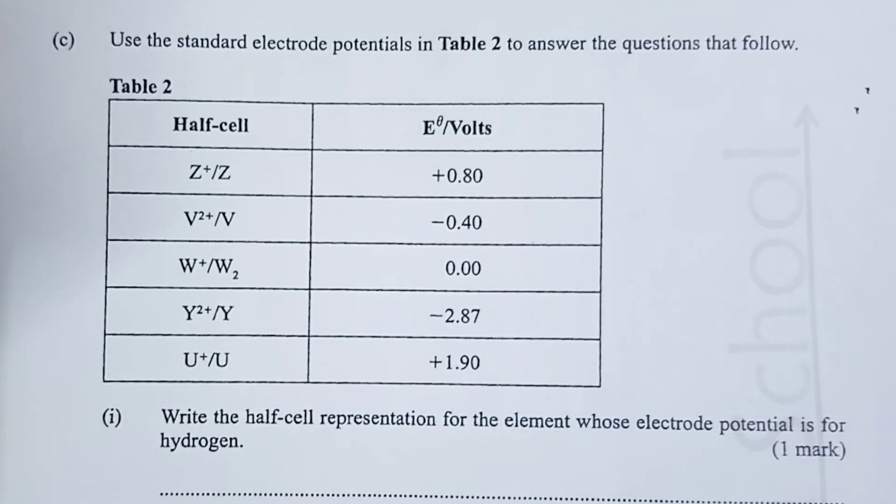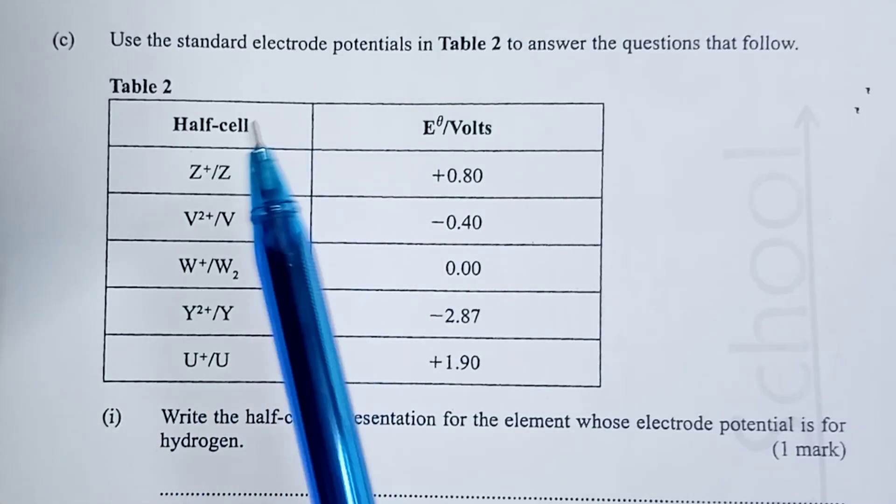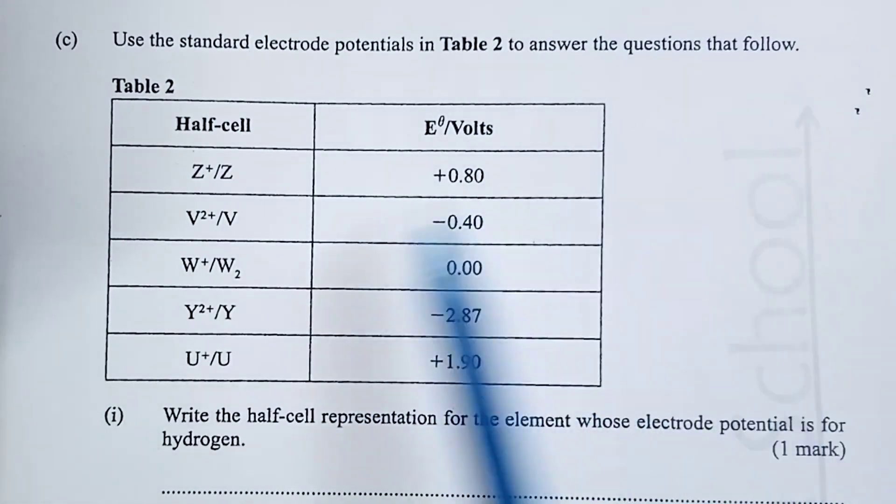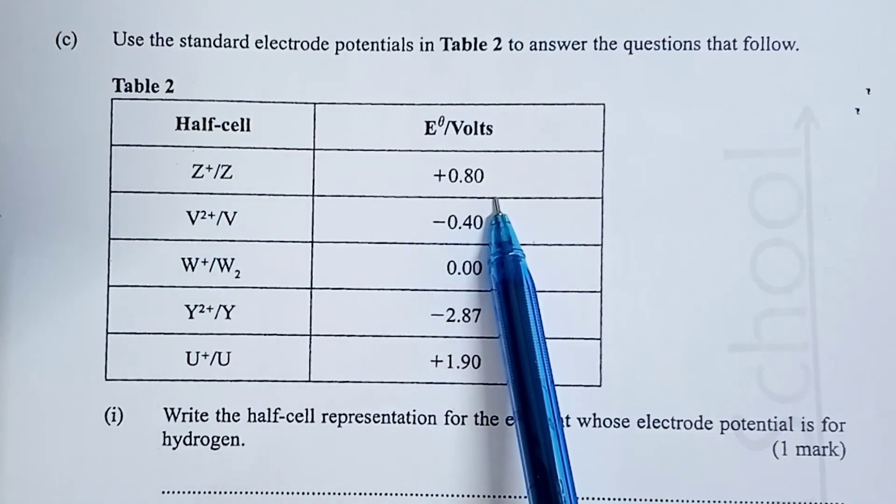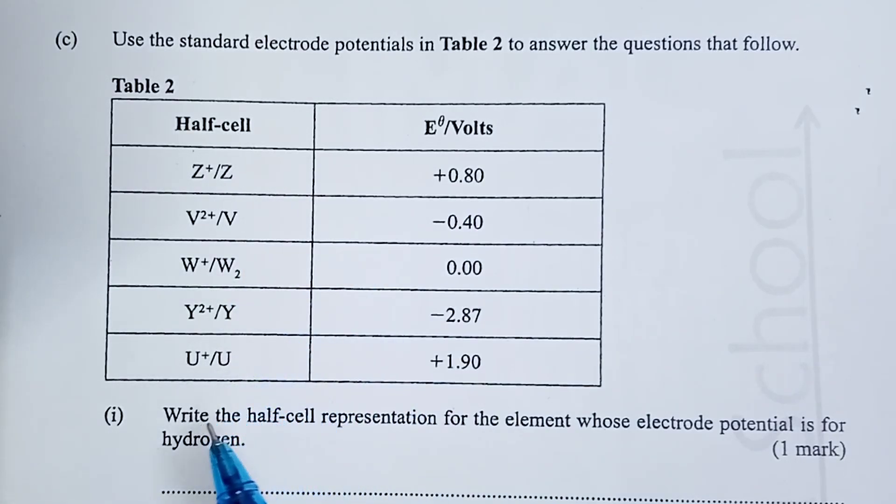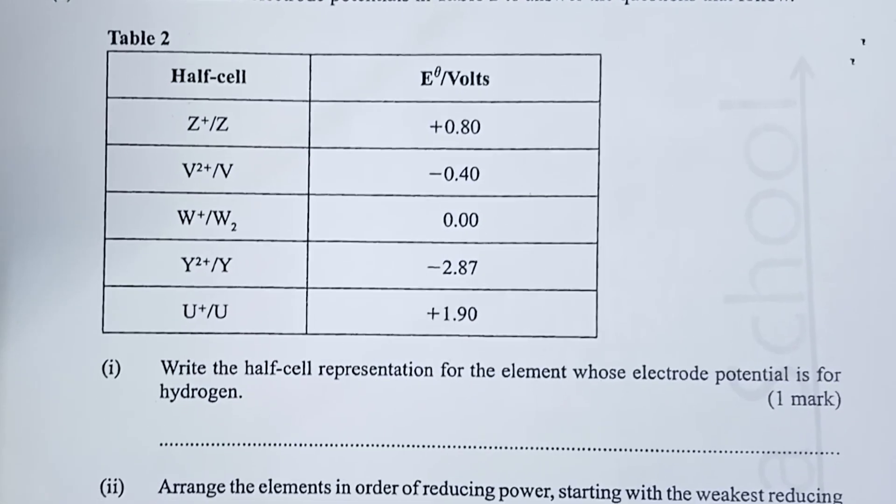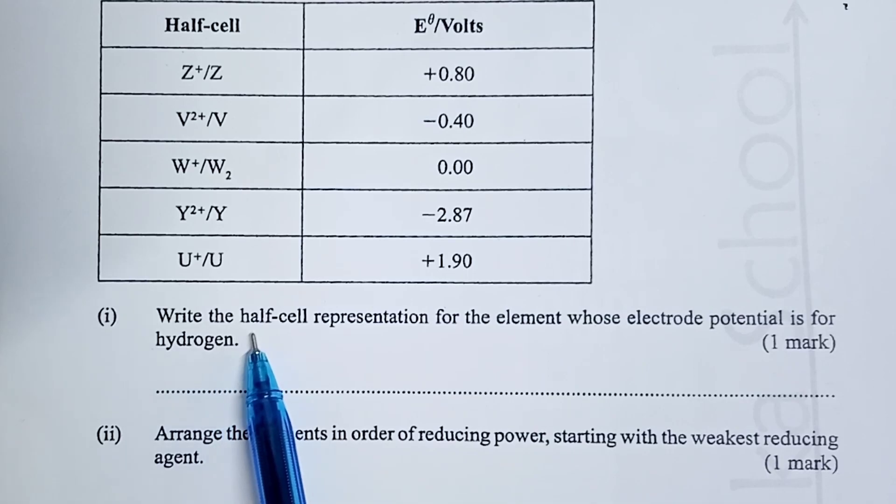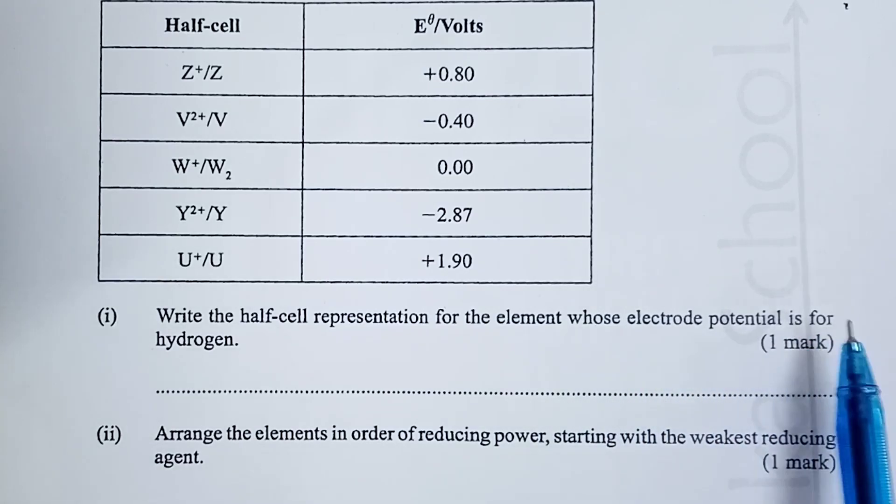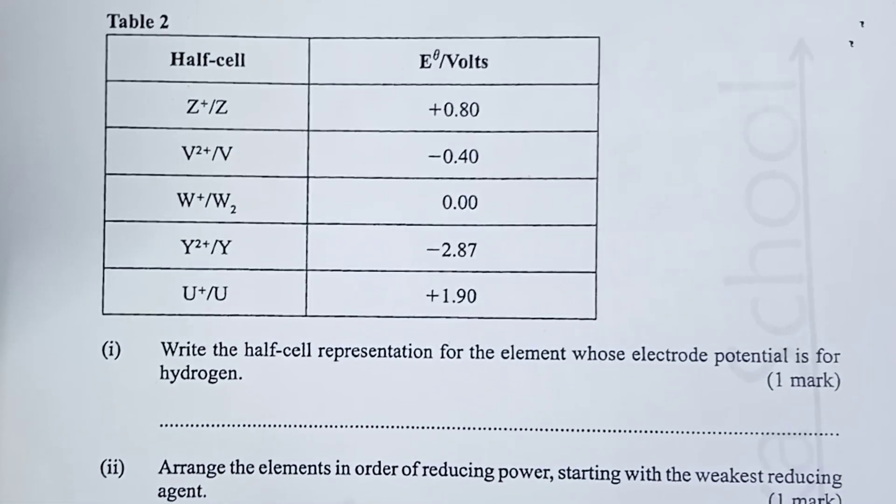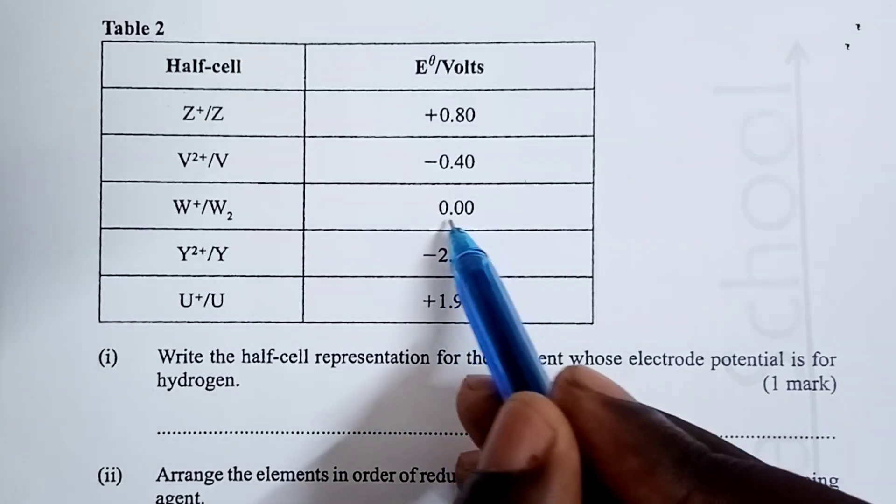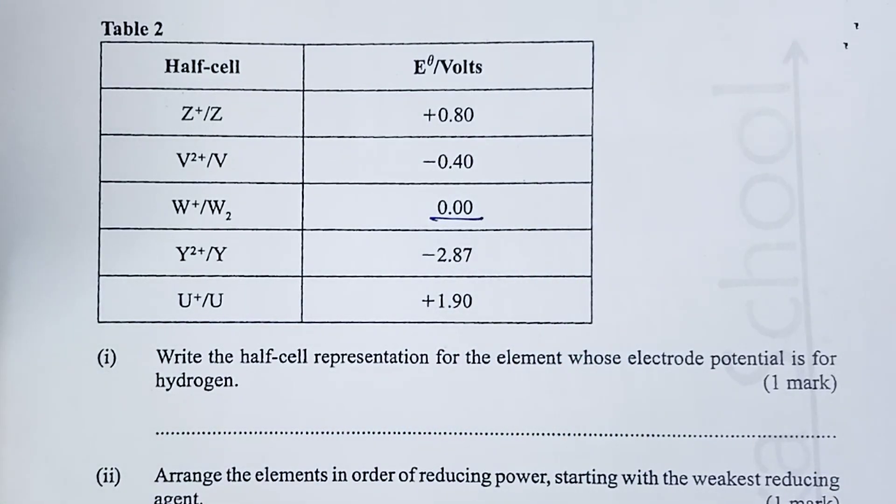At B of question three, for the year 2018, KCSE chemistry paper two, actually tested on electrochemistry. We are told, use the standard electrode potentials in table two to answer the questions that follow. A half Z of element Z, the E naught is indicated here. Element V, W, Y, U. Question one for part B. Write the half cell representation for the element whose electrode potential is for hydrogen. A student who has done electrochemistry knows that hydrogen half cell is the reference half cell. Therefore, its electrode potential is always zero.